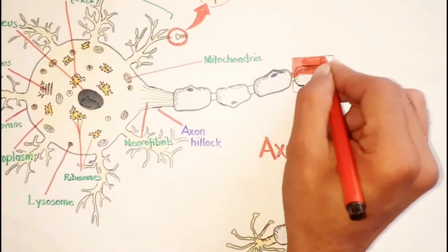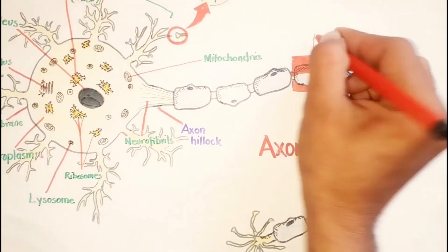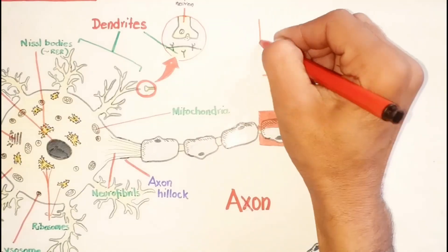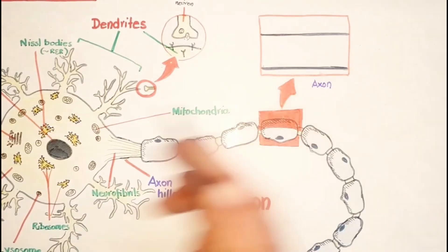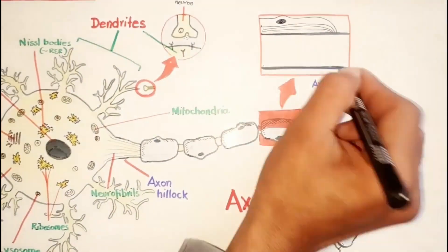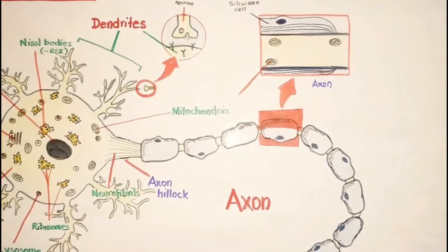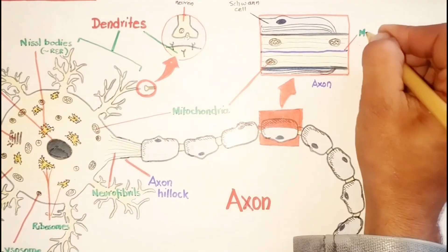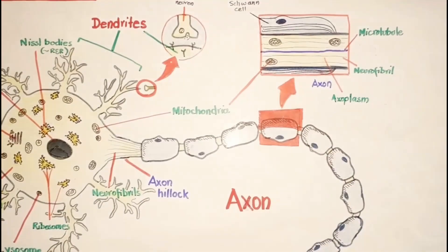Now if we just zoom into this area, we would see many mitochondria, microtubules and neurofibrils, and the axon cytoplasm means the axoplasm.